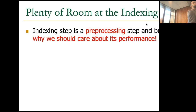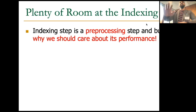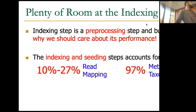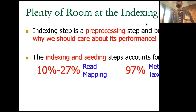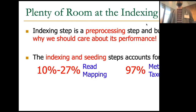The computational problem gets worse when dealing with pan-genome or metagenomics data because we have a large number of reference genomes. We observe plenty of room for improvement at the indexing level. There's a lot of research focused on accelerating sequence alignment, but we focus on indexing and seeding. There's a misconception that indexing is just a pre-processing step — done once, stored somewhere, and re-run before each analysis. In fact, indexing and seeding accounts for about 10 to 27 percent of the total execution time of read mapping, and up to 90 percent of metagenomic analysis, especially for tools that only query k-mers without sequence alignment, like Kraken 2.